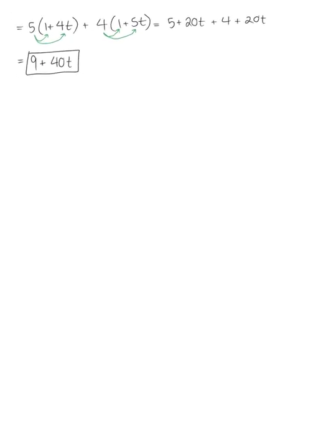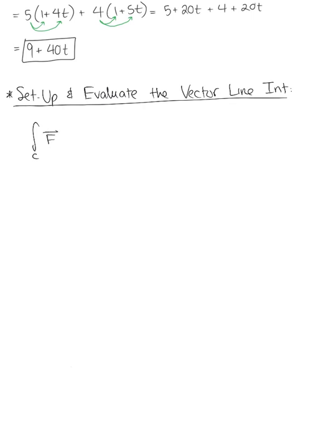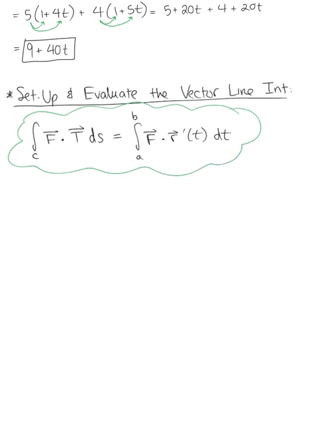And we're now ready to set up that line integral. We have our vector line integral over C of F·T ds, which we converted to the integral from a to b of the dot product of our vector field with the tangent vector dt. So plugging in what we have, this is the integral from 0 to 1 of (9 plus 40t) dt.